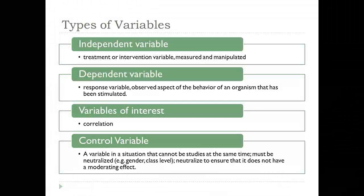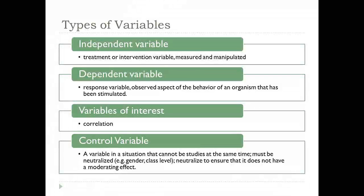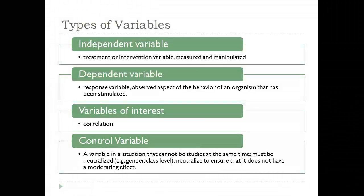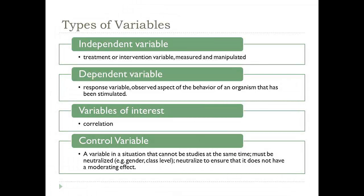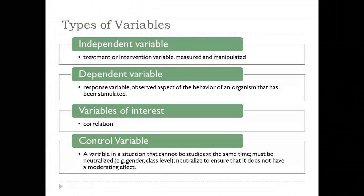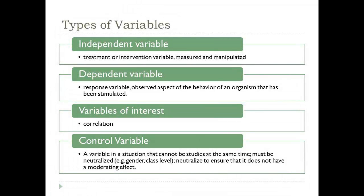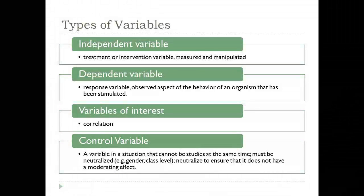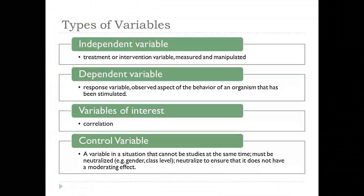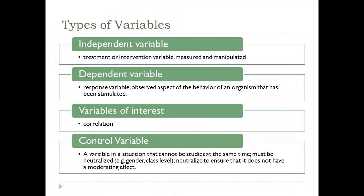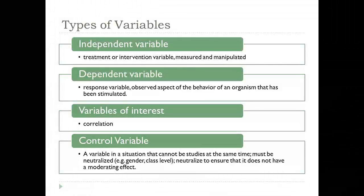An independent variable may be something such as an intervention — let's say a math intervention for second grade students. Let's say the independent variable is type of math lesson, and one type of math lesson is a traditional math lesson, and the other uses a problem-based approach. So you have one independent variable with two levels. It's the variable that you're looking to have an effect on another variable.